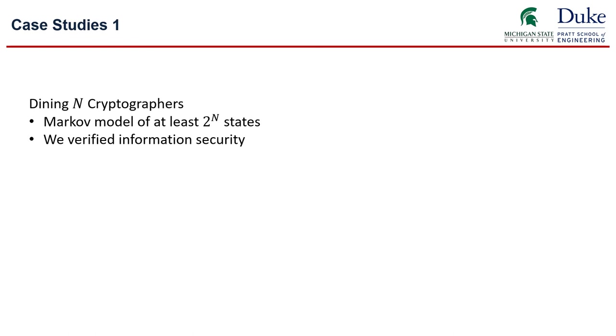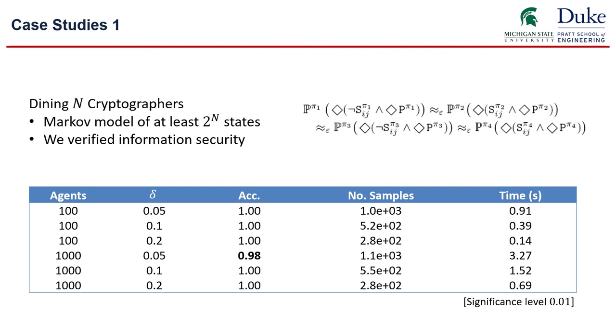Moving on, I'm going to show you a few examples on which hyper SMC can solve challenging security problems. The first case study is on dining cryptographer. It is a well-known and provably secure multi-party computation algorithm. Here, the security specification can be expressed by hyper PCTL star like this. We run hyper SMC on this protocol that is provably secure to validate the correctness of hyper SMC.